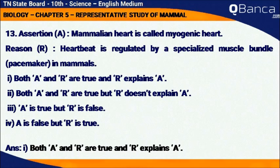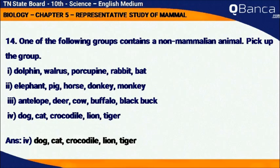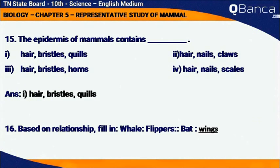Both A and R are true and R explains A. One of the following groups contains a non-mammalian animal — pick up the group: Dog, Cat, Crocodile, Lion, and Tiger. The epidermis of mammals contains hair, bristles, and quills.